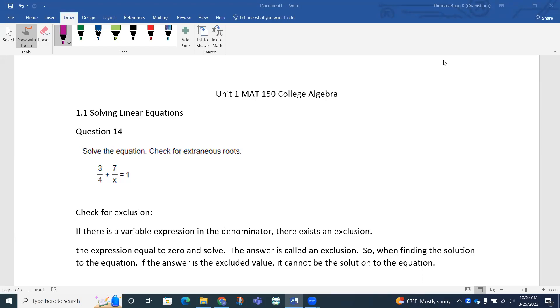Looking at section 1.1, solving linear equations, this is question 14. Question 14 says solve the equation and check for extraneous roots. If we look at the equation, we have 3 over 4 plus 7 over x equals 1.